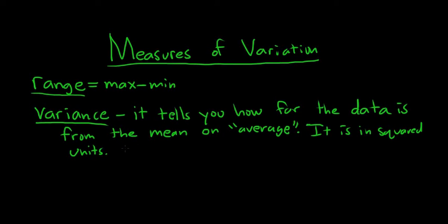So what we do is we get rid of the squared. To get rid of something squared, you take the square root. So if you take the square root of the variance...